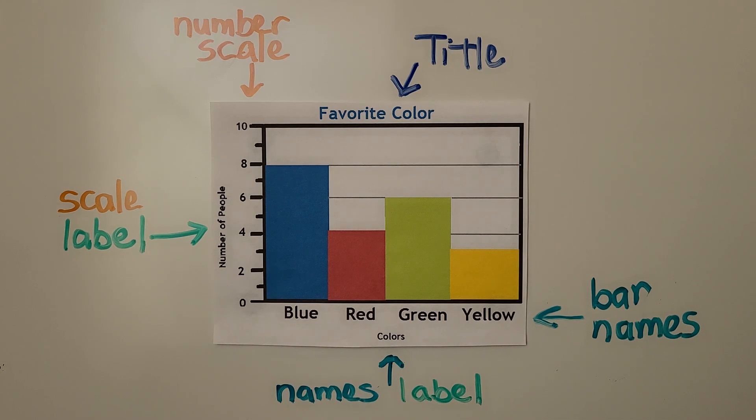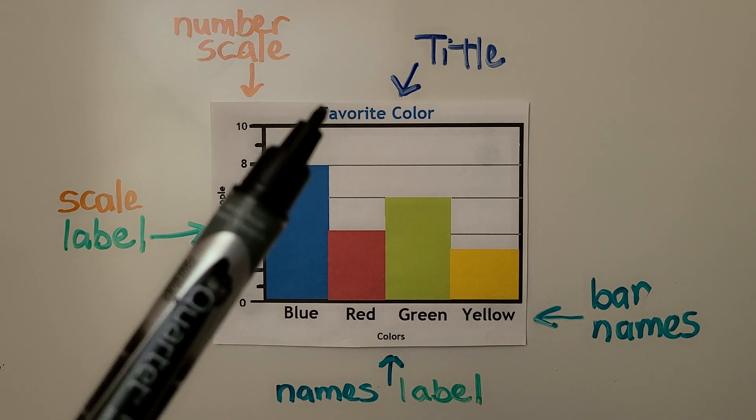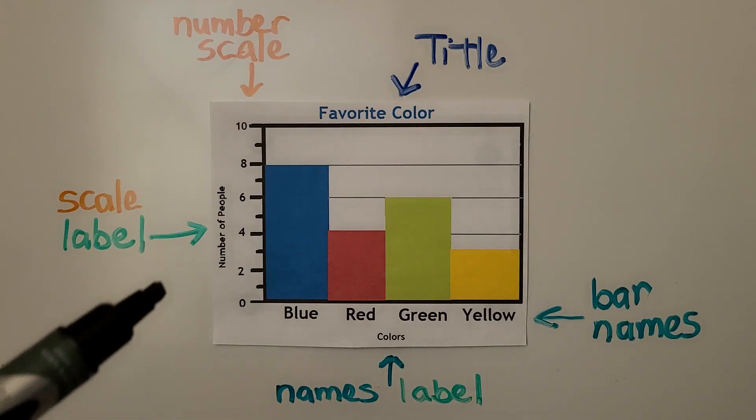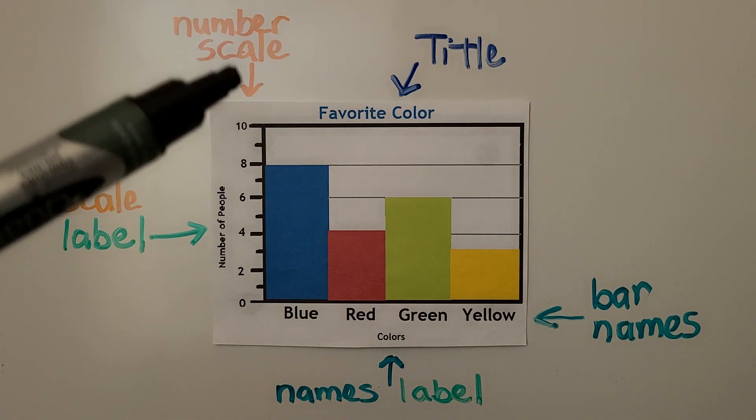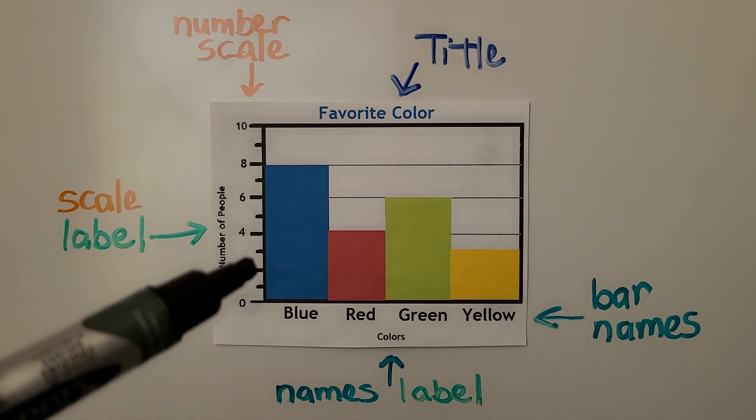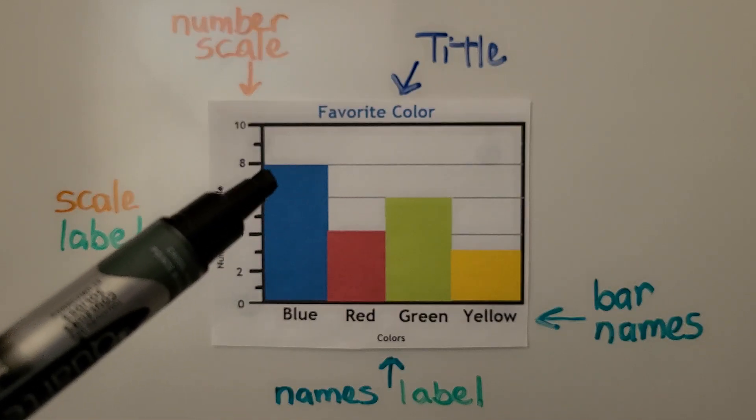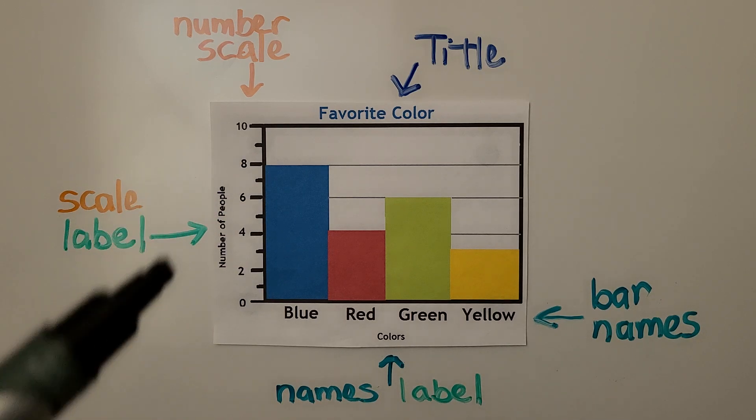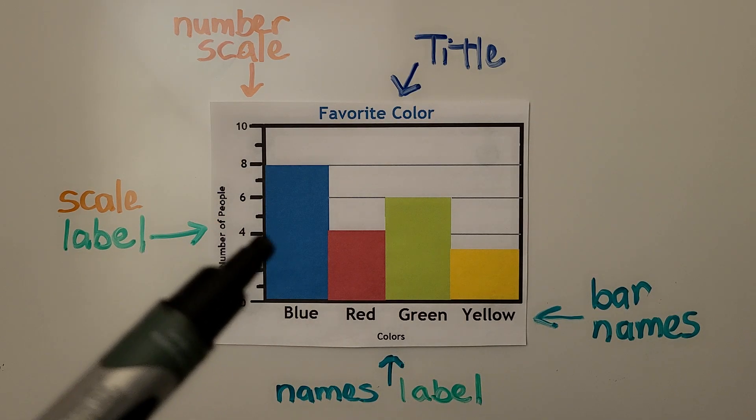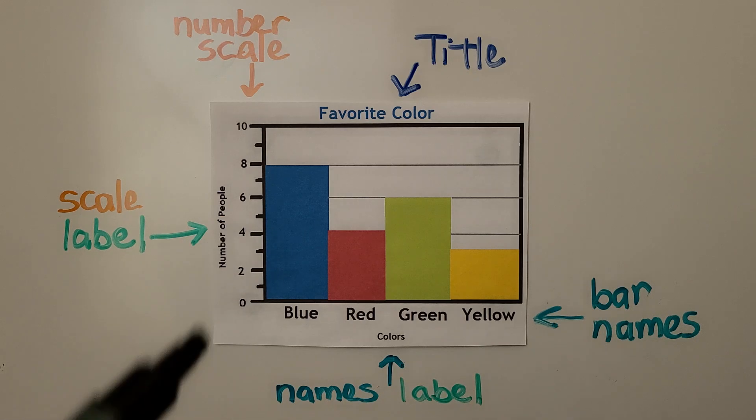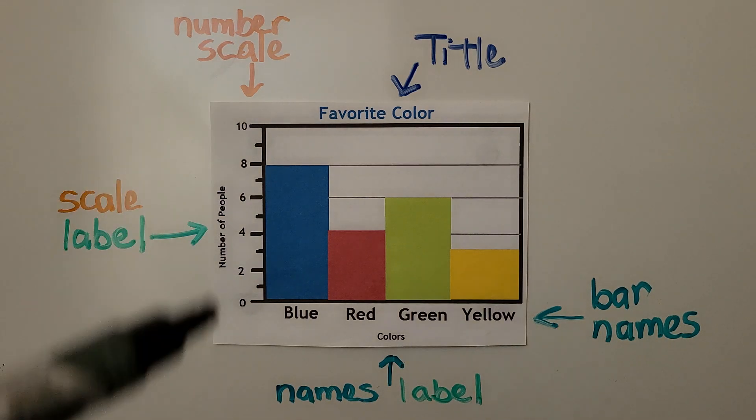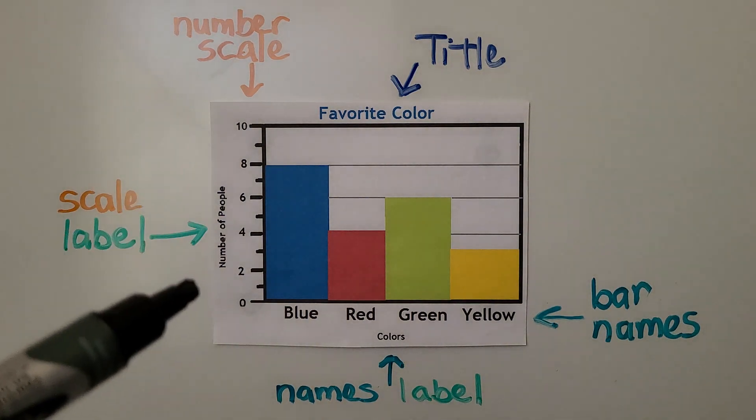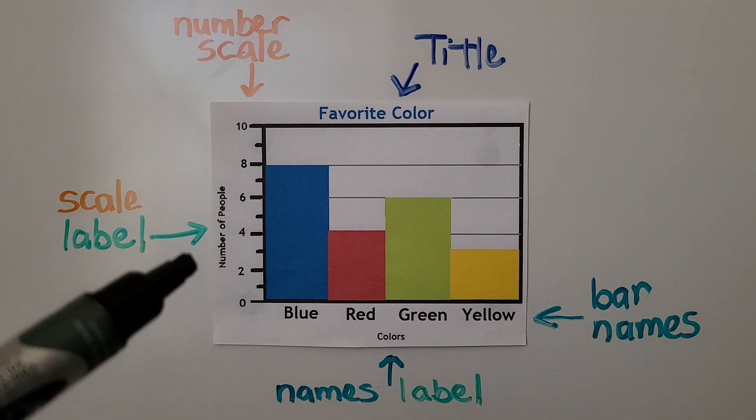So here's a bar graph and we can see the title is favorite color. On this side is the number scale showing how many. We can see that the rectangle bar lines up with a number like blue is eight, red is four. See how we read it going across this way? So that's the number scale and here's the label for the number scale. It's the number of people.